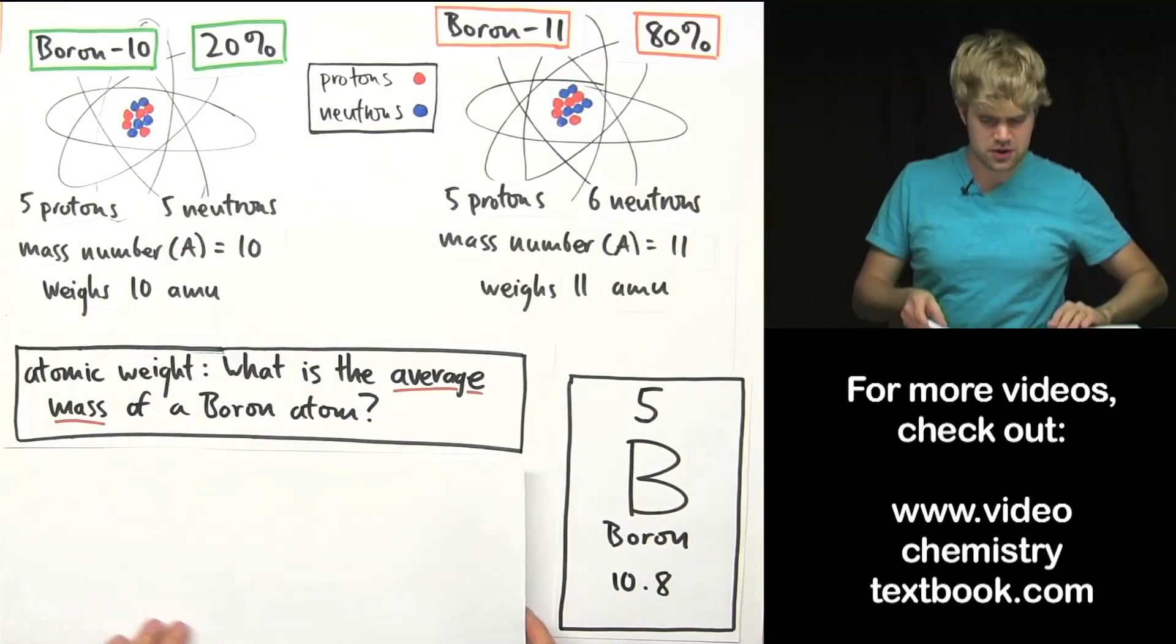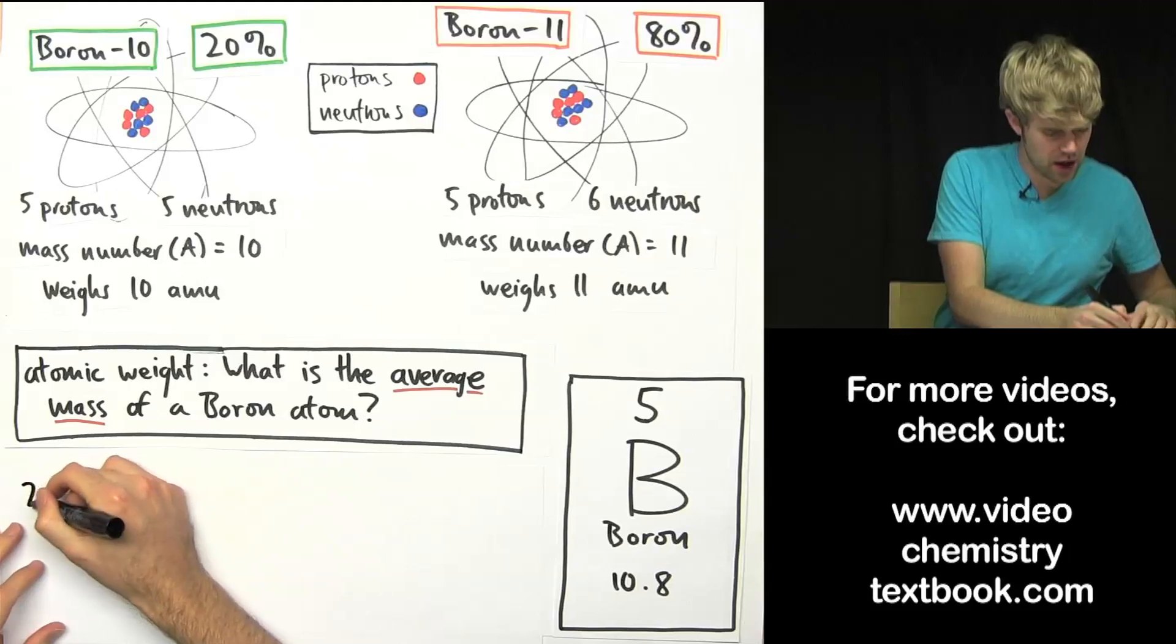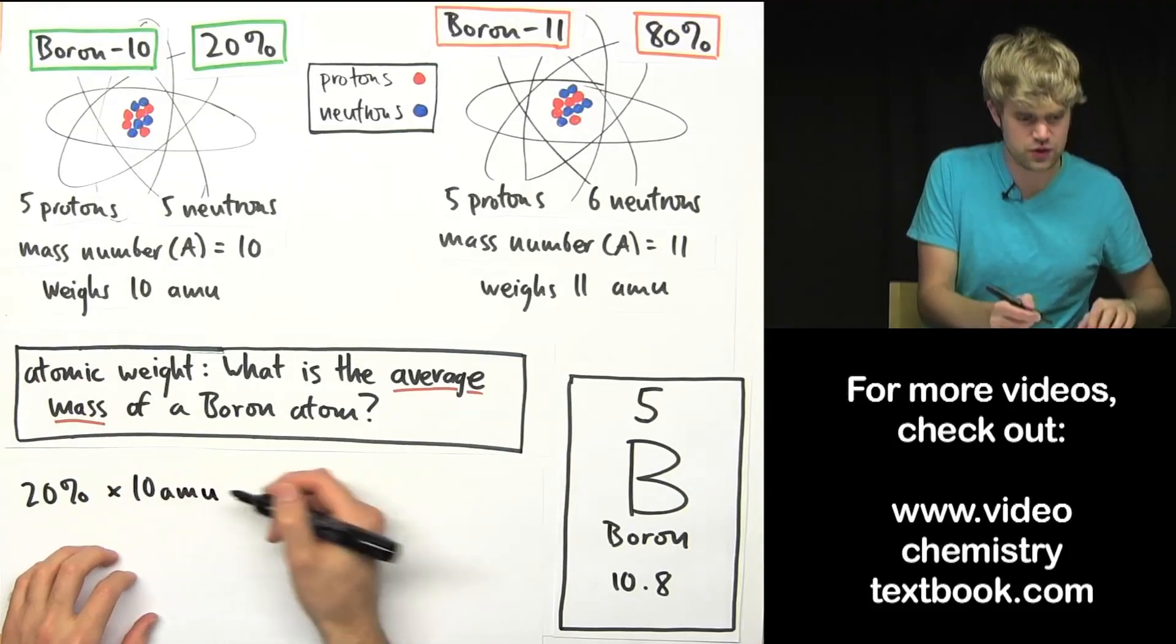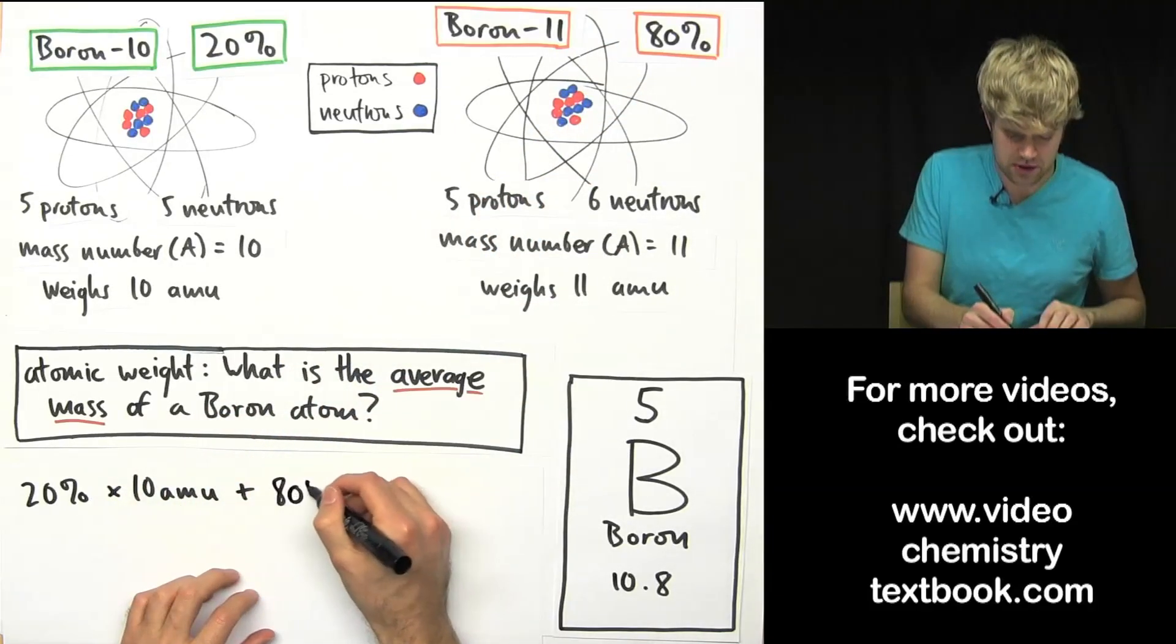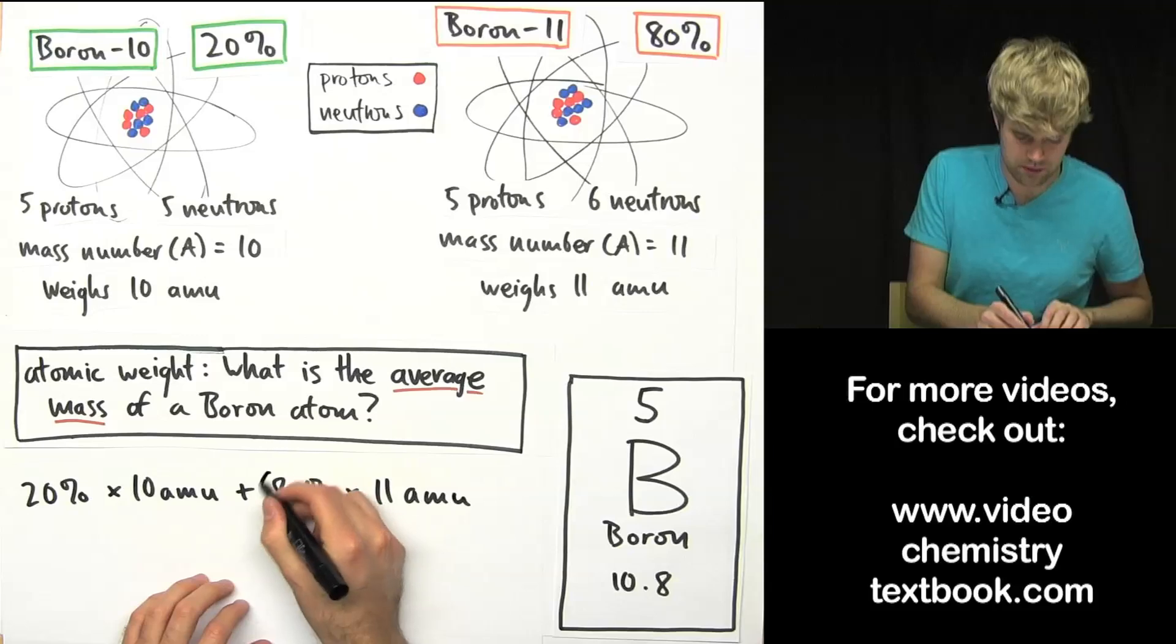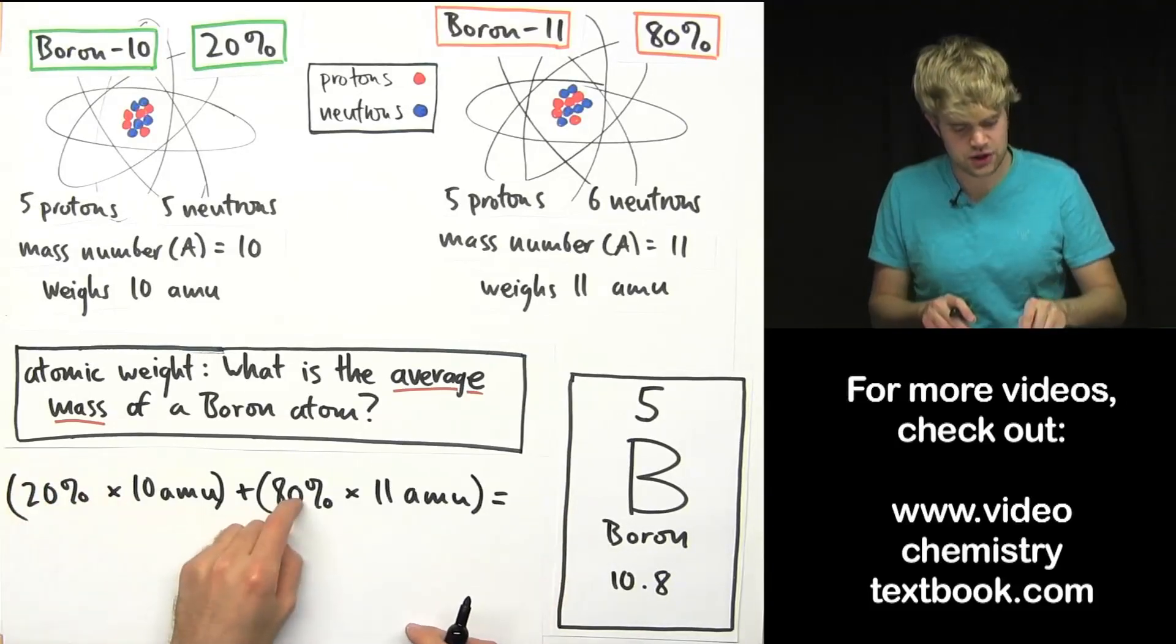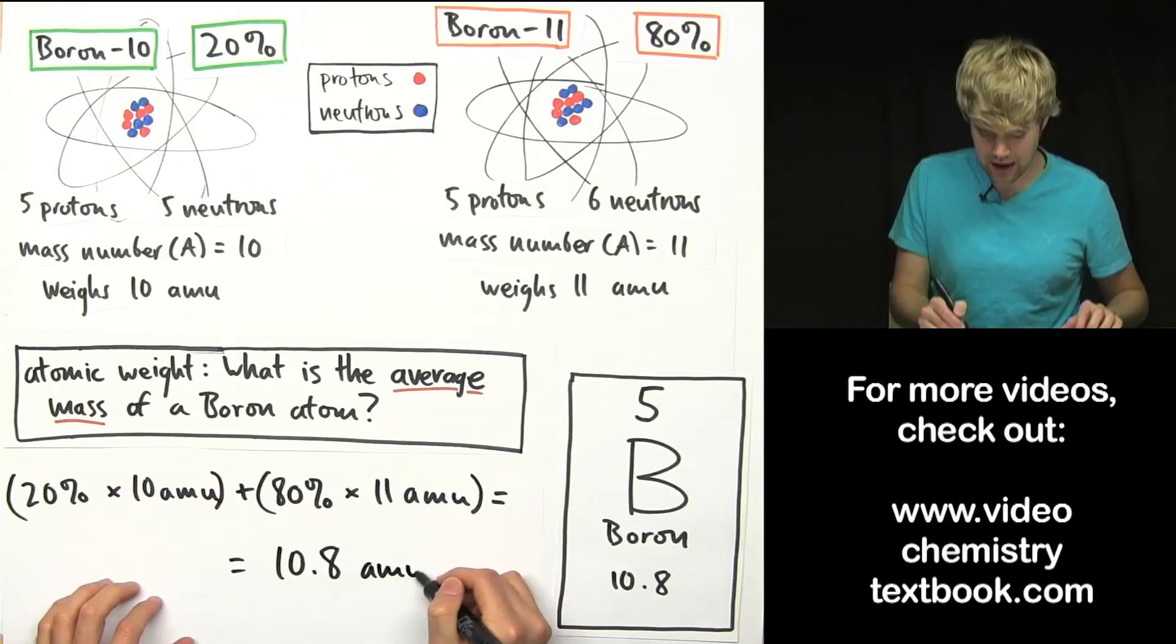Here's how we do that. Here's how we would determine the atomic weight. So boron-10, we have 20% of the total boron atoms are boron-10. So we're going to do 20% times 10 amu which is what the boron-10 atom weighs. And then we're going to go over here and do 80% that's how much boron-11 we have times 11 amu. If you want, you can put these in parentheses just so you can see the math a little bit easier. When we end up multiplying this out, we'll have to convert the percentages into decimals into 0.2 and 0.8, we end up with 10.8 amu.